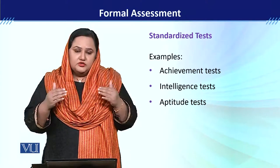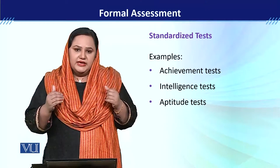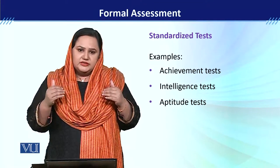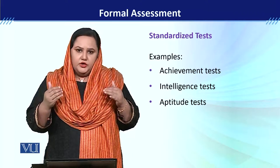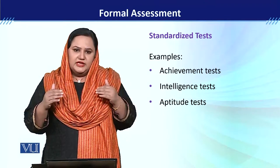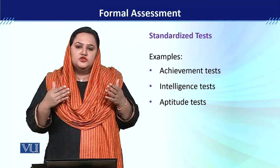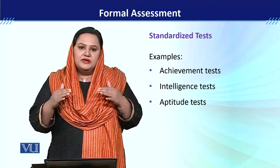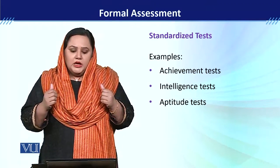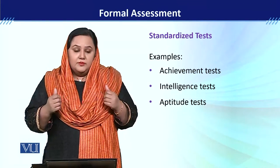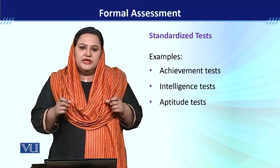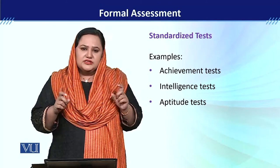مثلاً اگر ایک شخص 24 سال کا ہے اور اس کی mental age بھی 24 سال کے equal ہے، تو ہم کہیں گے کہ اس کا IQ level that is appropriate to his or her age۔ اسی طرح ہم بات کرتے ہیں aptitude test کی - aptitude test یہ determine کرتا ہے کسی شخص کے اندر potential of learning for a specific thing۔